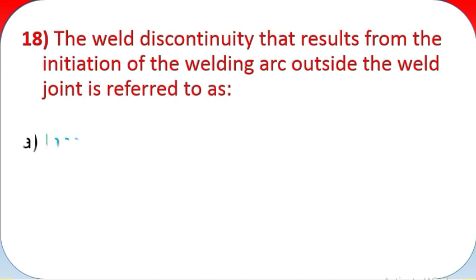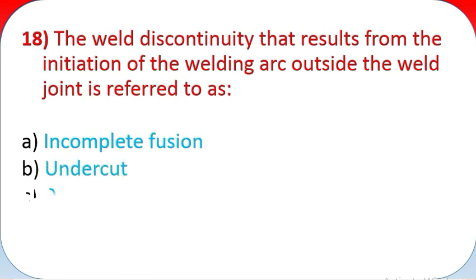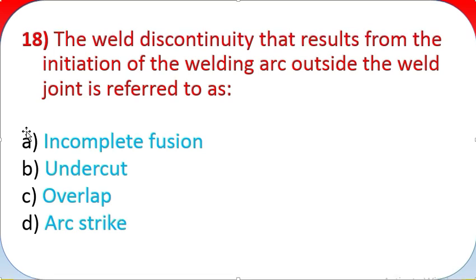Question 18: The weld discontinuity that results from the initiation of the welding arc outside the weld joint is referred to as: A - incomplete fusion, B - undercut, C - overlap, D - arc strike.